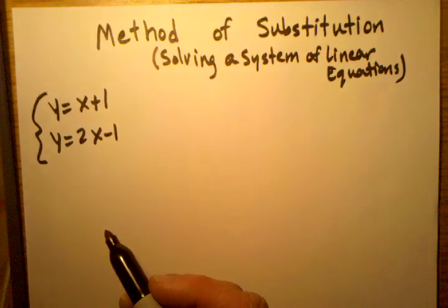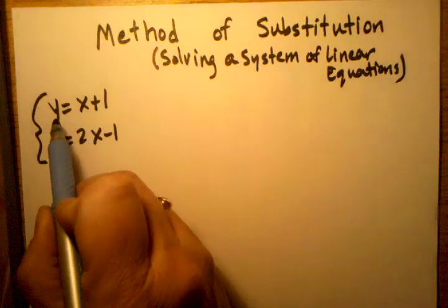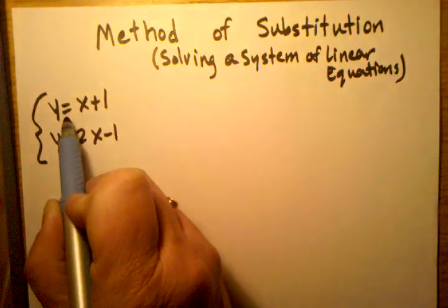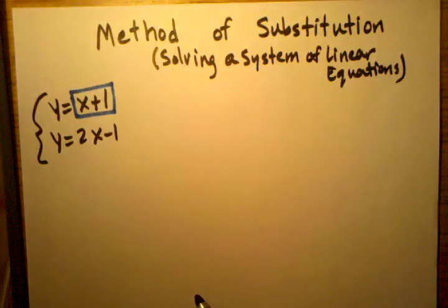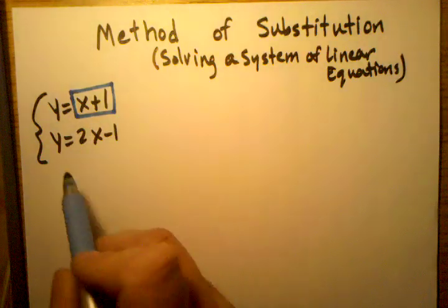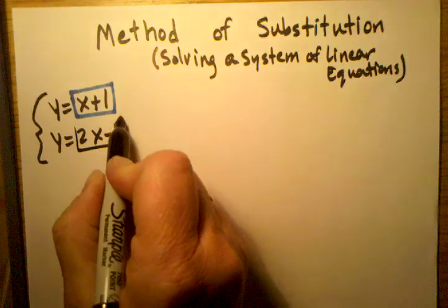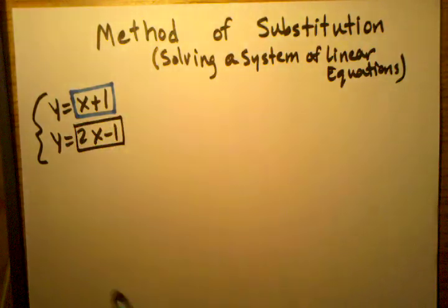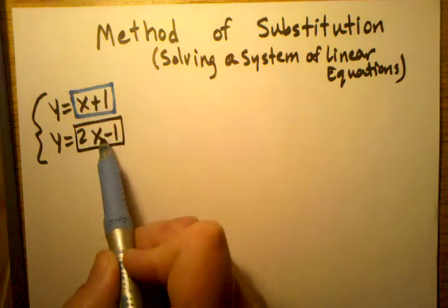But using the method of substitution, I'm going to model that with this system right here. I like to do this with colors when I'm working on the whiteboard in class. If we look at this equation, it's telling us that y equals all of this. I'll do this in different colors so we can see what's going on. But in this equation, in the same system here, we're also told that y equals 2x minus 1. I'll do that one in black. So if we know that y equals this and y equals that, then why can't we say that these two equal each other?